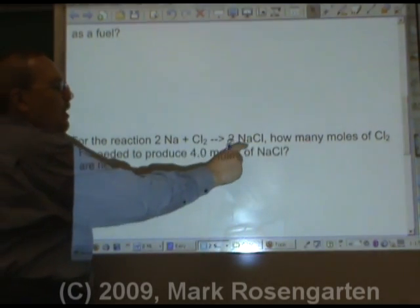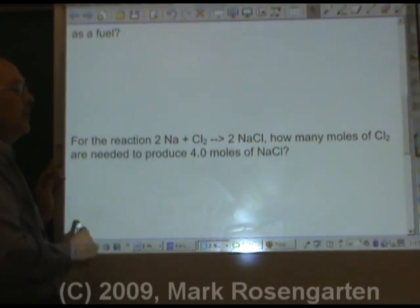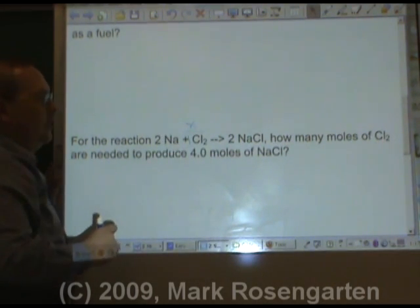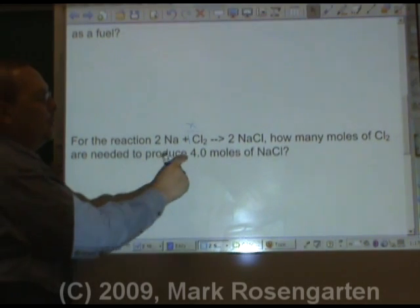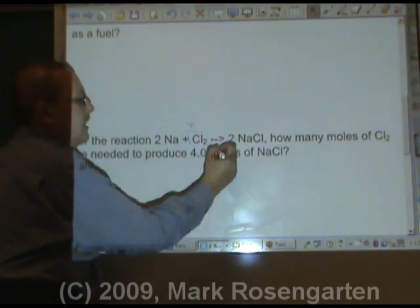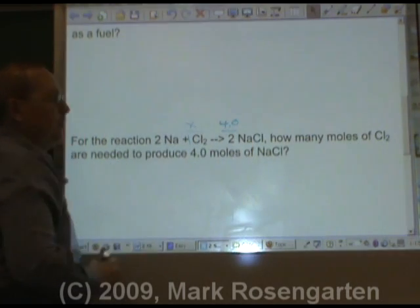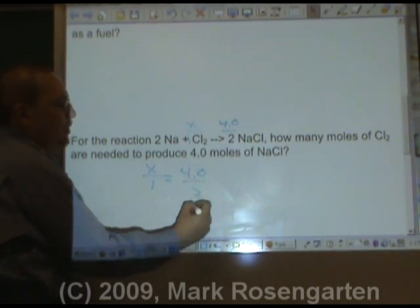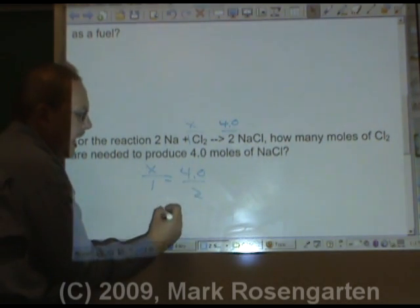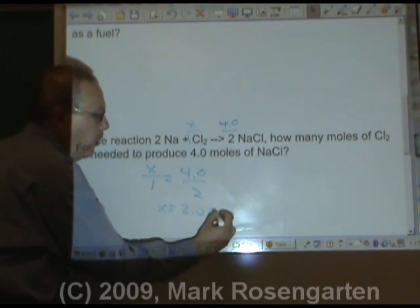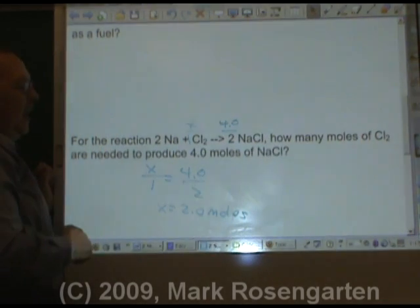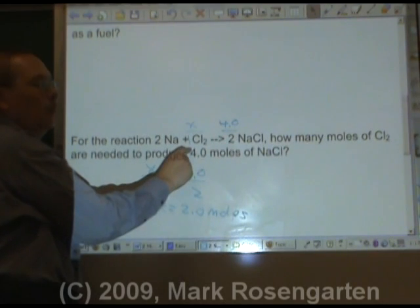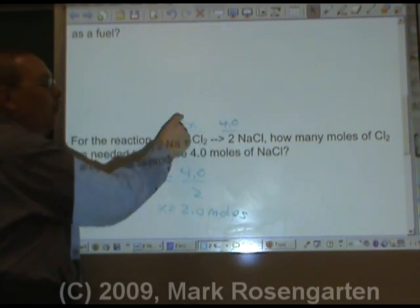For the reaction, 2Na plus Cl2 forms 2NaCl. How many moles of Cl2, there's a coefficient of one here because there's no coefficient written, are needed to produce 4.0 moles of NaCl? X over one equals 4.0 over two. Four divided by two, X equals 2.0 moles. And that makes sense because being a one to two ratio, whatever sodium chloride is, the chlorine will be half that amount. Half of four is two.